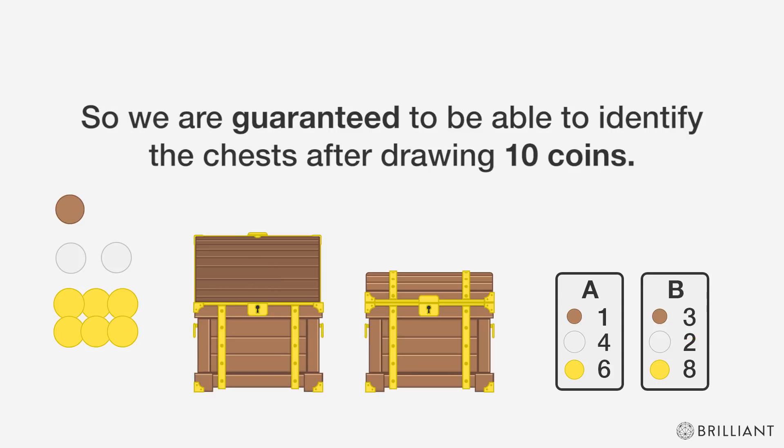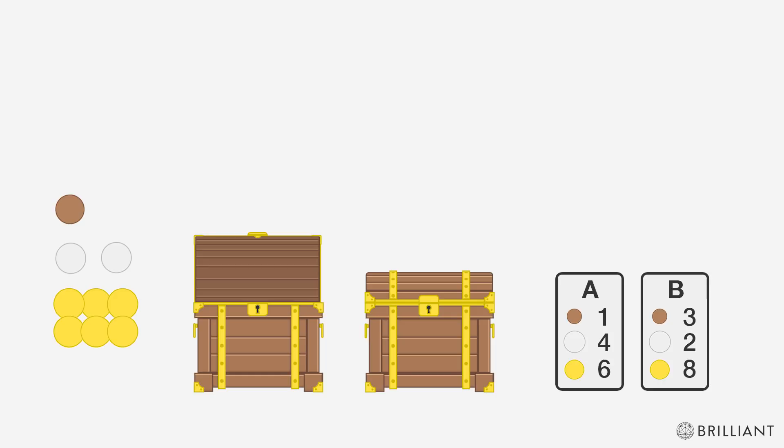So we're guaranteed to be able to identify the chests after drawing 10 coins. That's the nine shared coins and one final identifying coin.